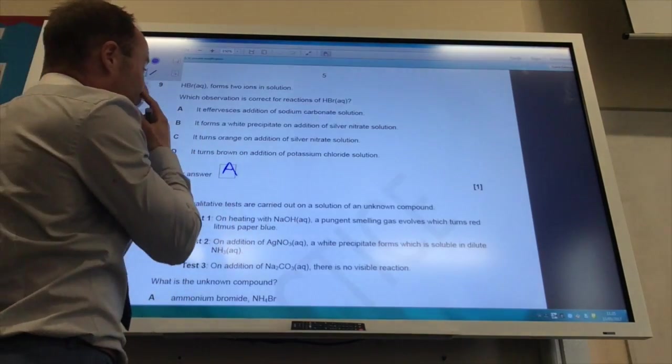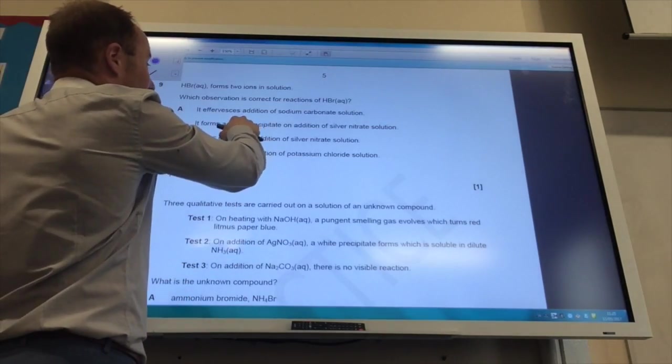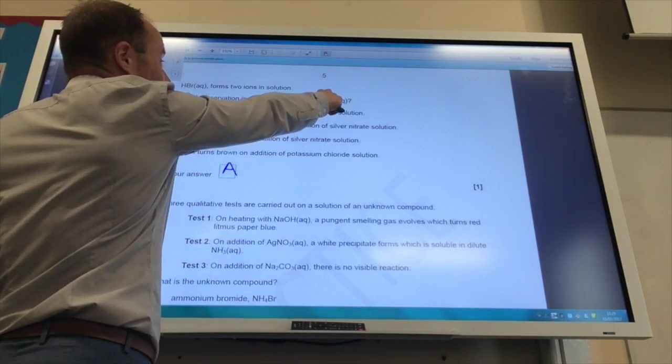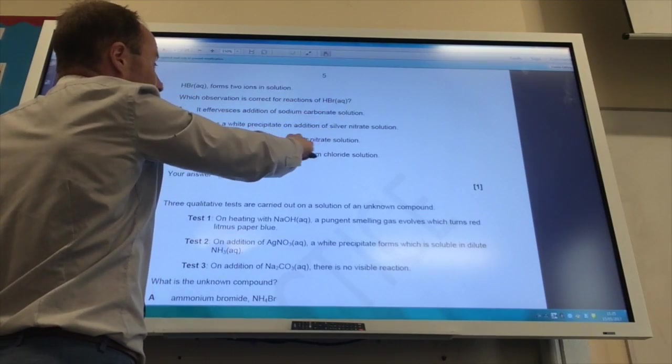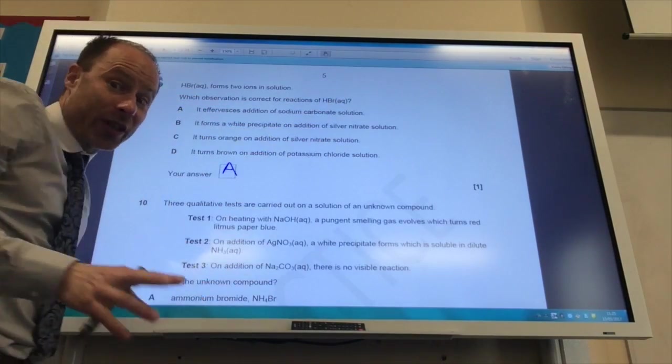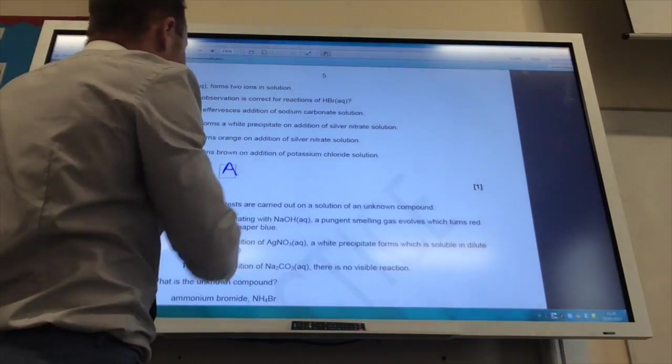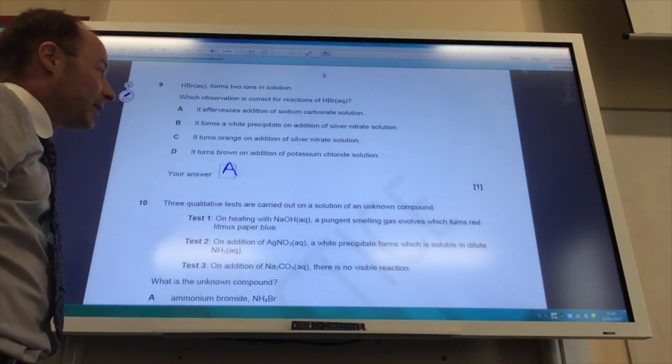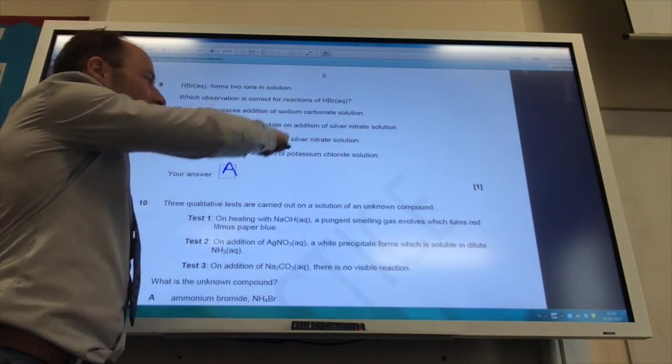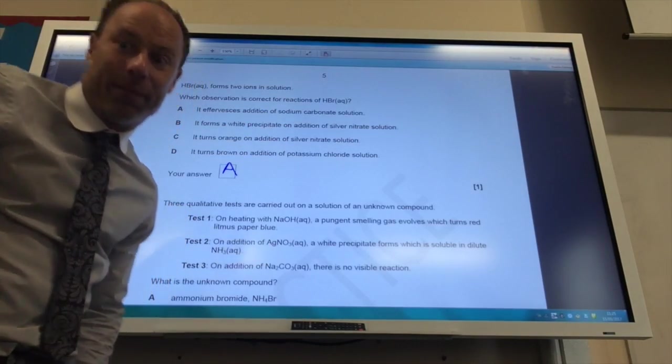You can go through the other ones. A white precipitate would be formed if it was a chloride ion, so that's not right. Orange with additional silver nitrate, that's just trying to confuse you. You always get a precipitate. It turns brown on addition of potassium chloride. These two are trying to confuse you with halogen displacement reactions. Don't let them do that.